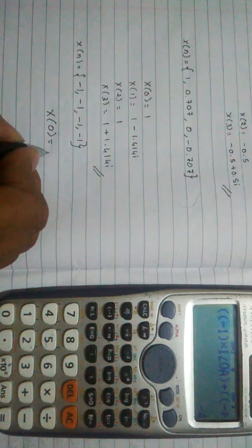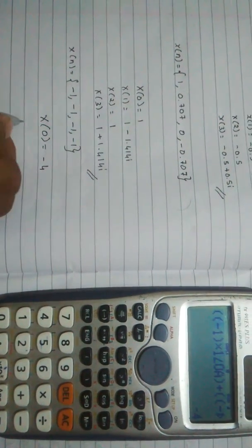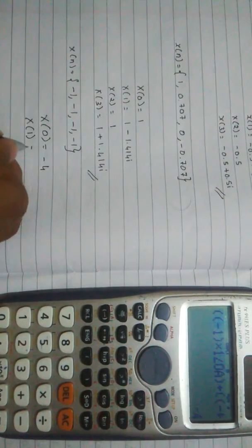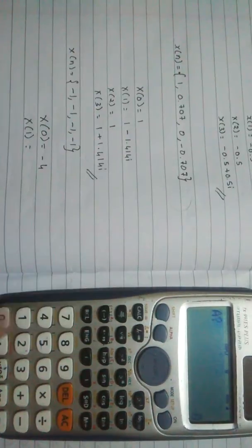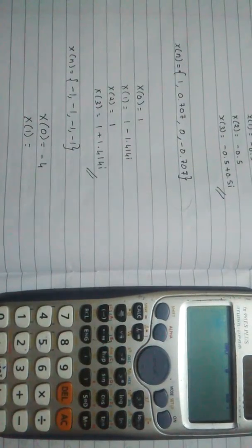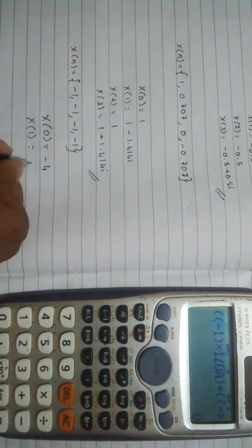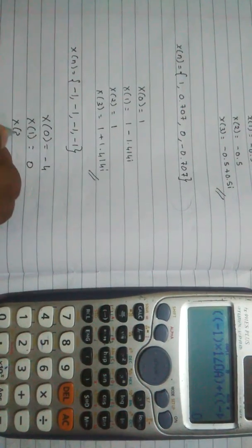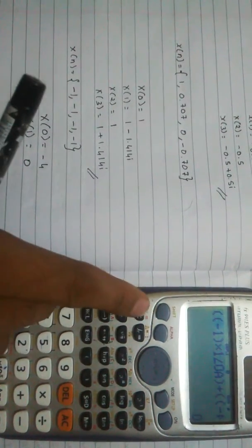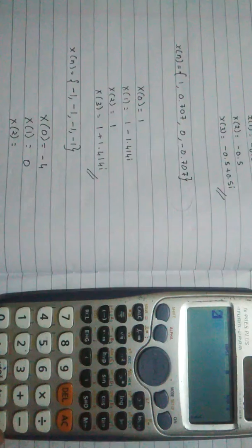So x of 0 equals minus 4. And then x of 1, hit calculate again and then 1 and then equals. And then x of 2 equals, calculate again and then hit 2 and then equals.